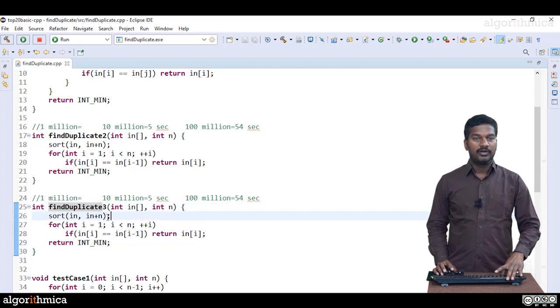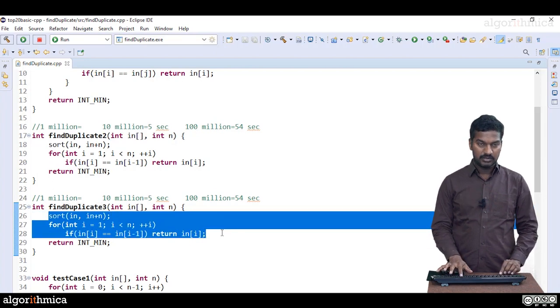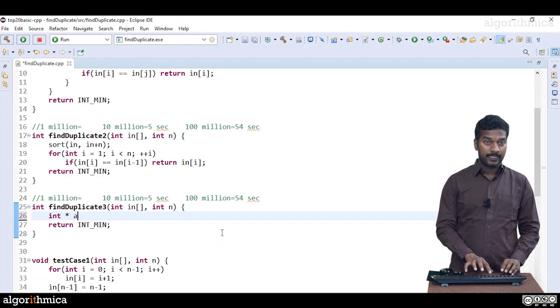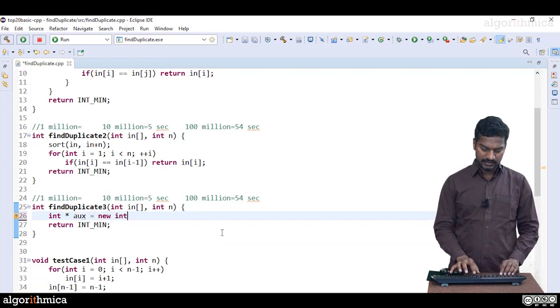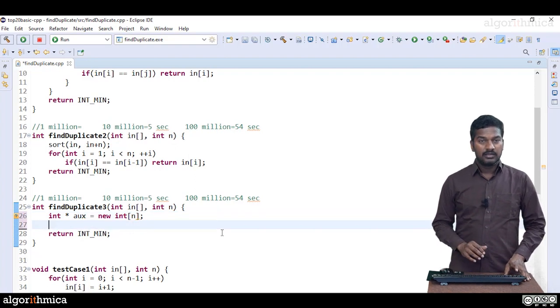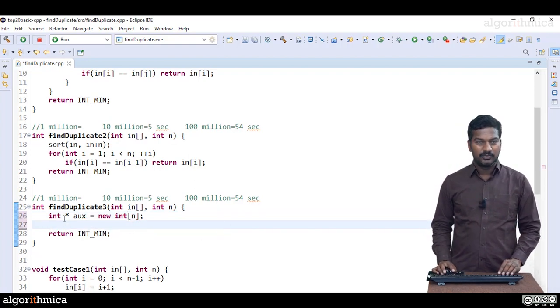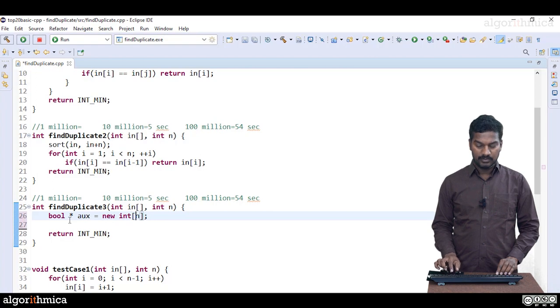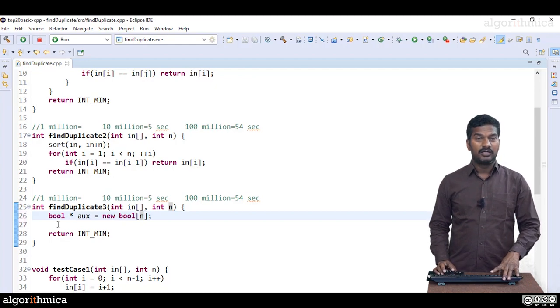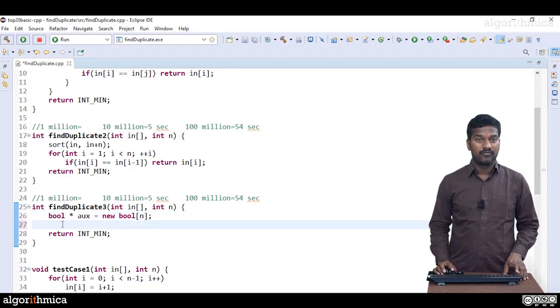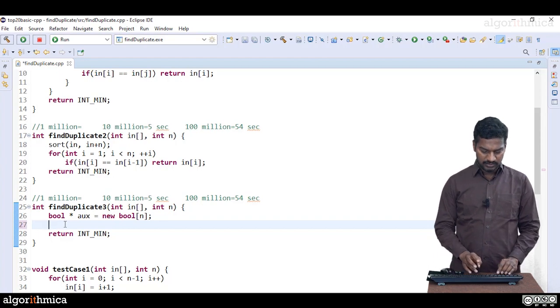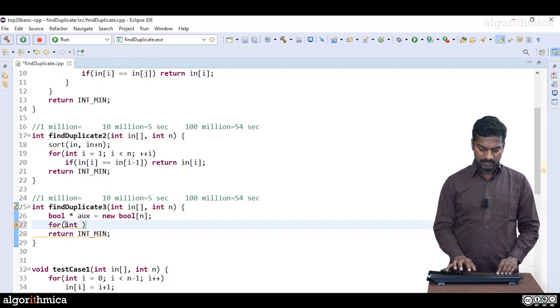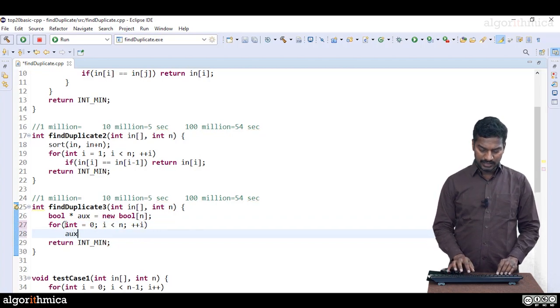Let me copy this findDuplicate2 to findDuplicate3. Here we are not doing any sorting. We need to take an extra auxiliary array: new integer array, size n. Maybe even integer array we don't need, boolean array is enough. Just want to know true or false. So default values will be false. Let me initialize it: for i equals 0, i less than n, plus plus i, aux[i] equals false.